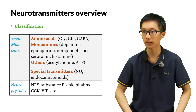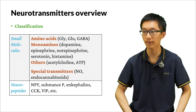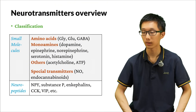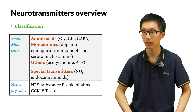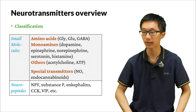On the other hand, among neuropeptides we have NPY, substance P, enkephalins, CCK, VIP, and many other neuropeptides. Neuropeptides can be very diverse — firstly they can vary in length, and secondly they are peptides made of amino acid sequences. At each position there are 20 possible amino acids. Therefore, neuropeptides can be very different from one another.